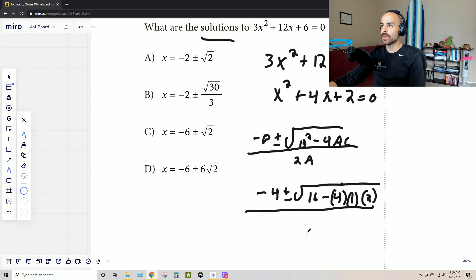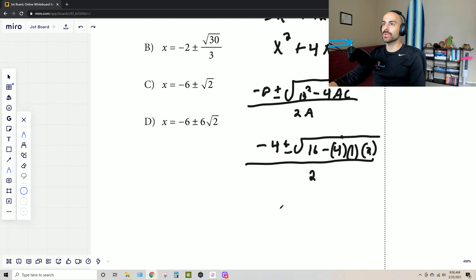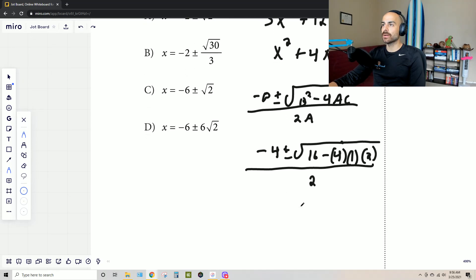So we have negative 4 plus or minus the square root of 4². So I'll just jump ahead in this testing timing: 16, 4, a which is 1 now, and then c which is 2 now. Let me extend that. And then all over 2a, which is just going to be 2, because a is 1. And then now I can rewrite this expression. I'm going to simplify this as well, so it's 16 minus 8, which really means that this is just 8.